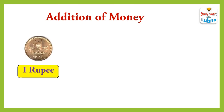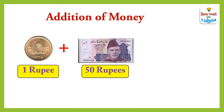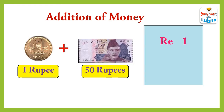When we add 1 rupee coin with 50 rupees note, what will we get? Let's see. Rupee 1 plus rupees 50 — when we add them, we will get rupees 51.